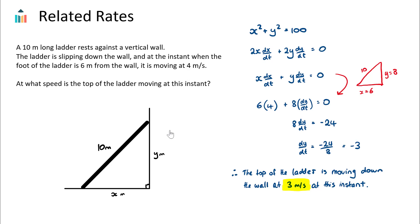If we were to choose a different instant, all of these numbers would be completely different because, as you can imagine, as the ladder slips out, the top of the ladder might speed up in its journey to go down to the bottom.